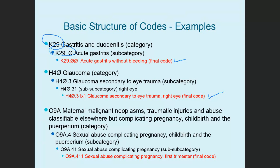Another example — this one looks funny when you're first starting coding because there's a letter in the middle of it. O9A, maternal malignant neoplasm, traumatic injuries and abuse, classified elsewhere but complicating pregnancy, childbirth and puerperium — that's the category. Then O9A.4 is sexual abuse complicating pregnancy, childbirth and puerperium. O9A.41 is sexual abuse complicating pregnancy. And O9A.411 is sexual abuse complicating pregnancy, first trimester. As you go down, each one gets more specific. You need to use the most specific code possible, using all characters possible.